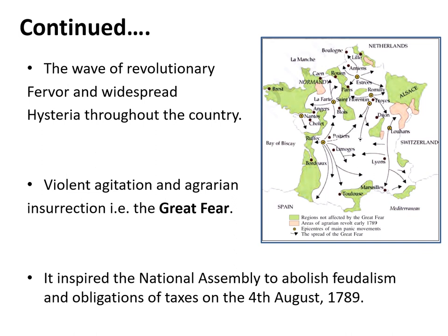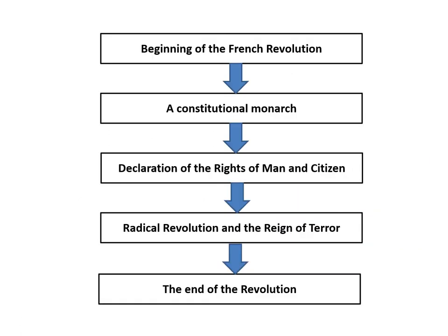This incident inspired the National Assembly to abolish feudal obligations and taxes on the 4th of August 1789, passing a decree — a legally binding agreement. So this covers the beginning of the French Revolution. It will be followed in the next videos by incidents such as France becoming a constitutional monarchy, the Declaration of the Rights of Man and Citizens, the revolution becoming more radical and the Reign of Terror, and finally the rise of the Napoleonic era, marking the end of the revolution.